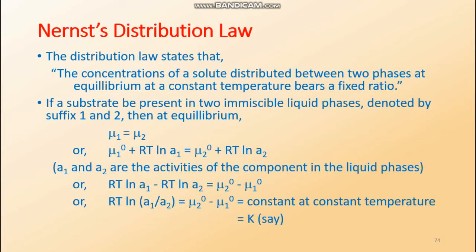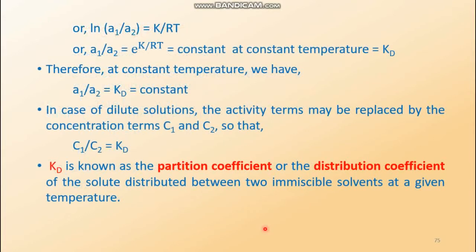The activities a1 and a2 can also be expressed in terms of standard chemical potential. If the standard chemical potential of solution one is mu1⁰ and of solution two is mu2⁰, these are constant terms. So instead of mu1 we write mu1⁰ + RT ln(a1), and instead of mu2 we write mu2⁰ + RT ln(a2). Rearranging this equation by taking logarithmic terms to the left and other terms to the right, we find that mu2⁰ minus mu1⁰ is a constant, and the logarithmic terms merge as RT ln(a1/a2), which equals a constant K at constant temperature.